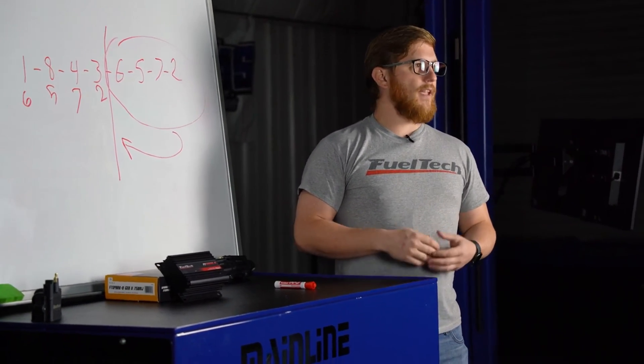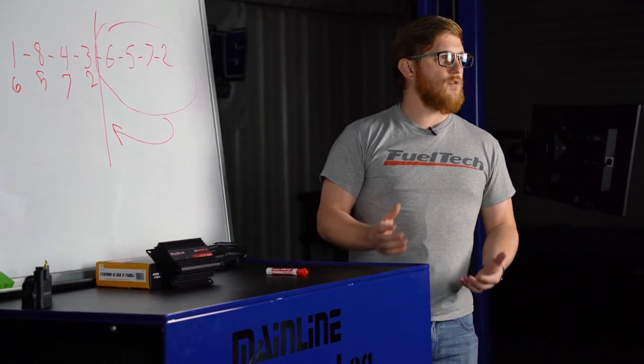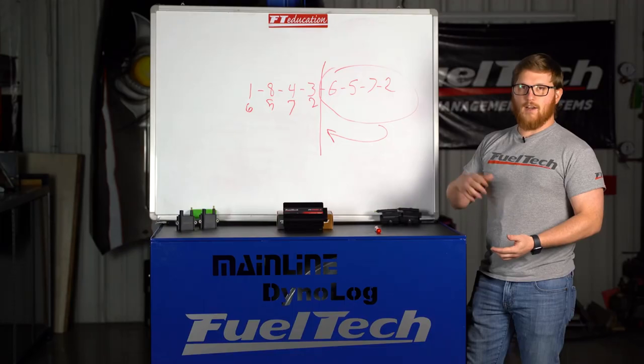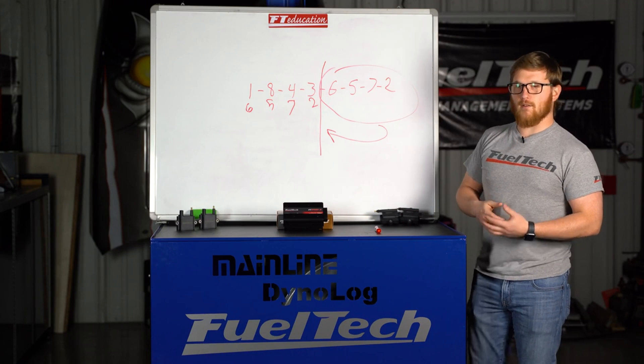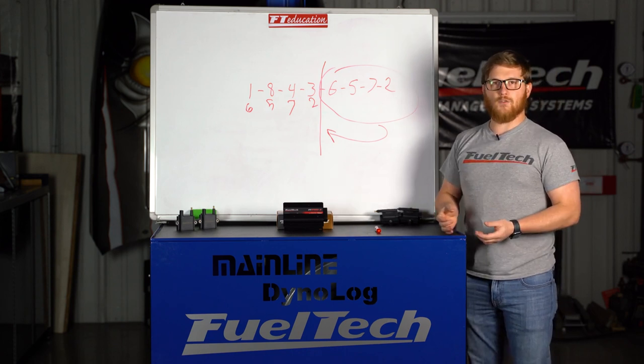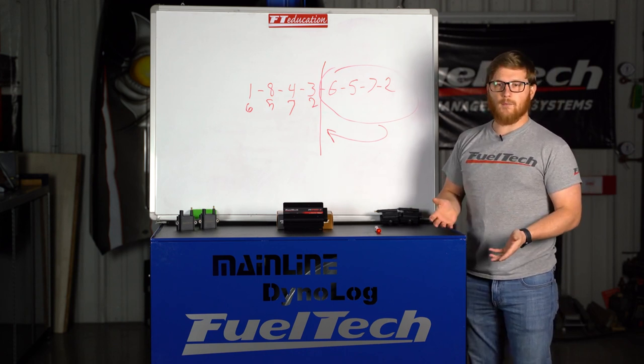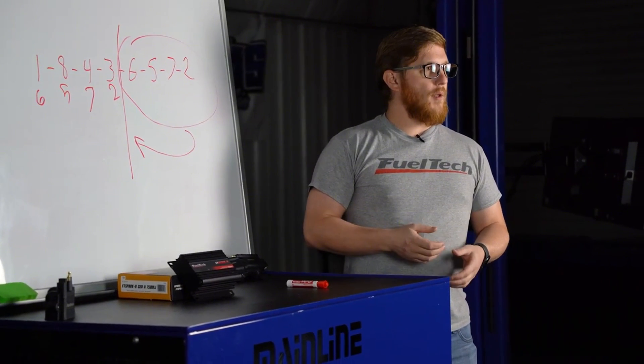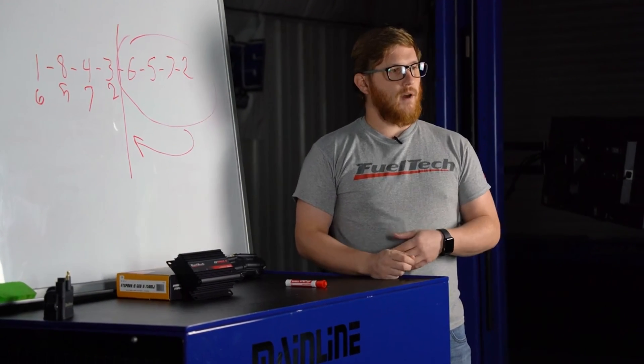Also, if you have a crank trigger that is missing tooth style, like a 12 minus one, which is our favorite, a 60 minus two, which a lot of the later generation LS engines and some other vehicles have from the factory, or even if you have an aftermarket one, those do not require a cam sync to be able to do coil on plug when you set them up as wasted spark.